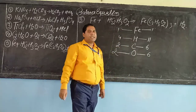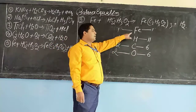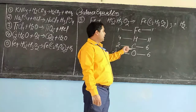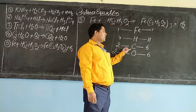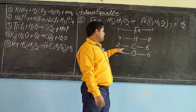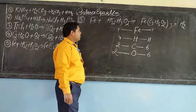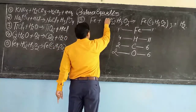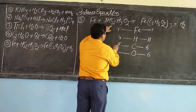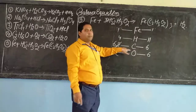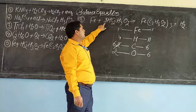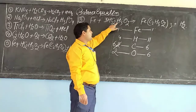Dear students, in any chemical equation, first we have to balance the metal, then the non-metal. But you see here, metal is already balanced. Next we will see the non-metal, that is carbon. Carbon atoms in the product side: 6, whereas in the reactant side only 2. So we will increase the number of carbon — we will put 3 here. 3 times 2 = 6.